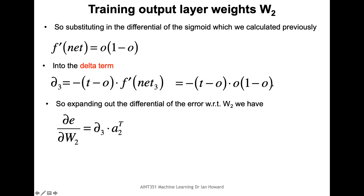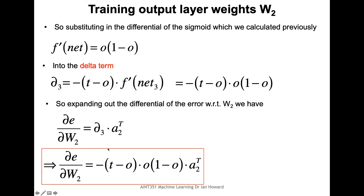Fully expanding out, the overall expression for how to change weights in the second layer is: -(t - o) * o * (1 - o) * a2^T. This is exactly the same as for a single-layer network, except instead of x transpose we now have a2 transpose — the activations coming in from the lower layer.